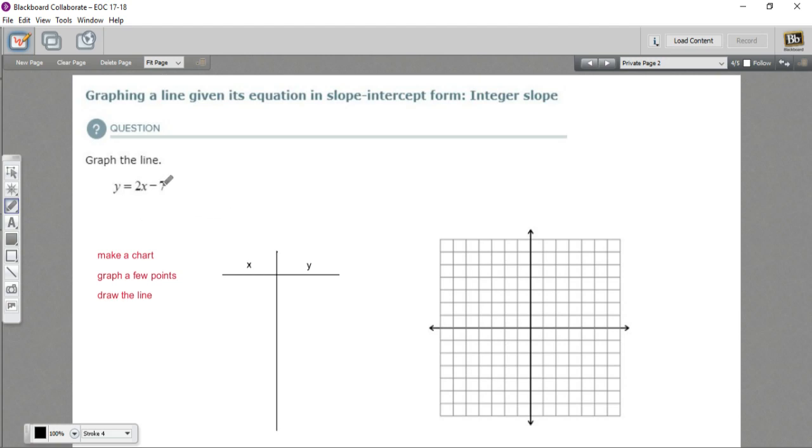In these problems we are graphing lines, linear equations, that are in the form of y equals mx plus b. So some number multiplied by x and then some other number here. Here we've got 2 multiplied by x and we've got a negative 7. This is also called slope-intercept form and I'll show you why in a little bit.